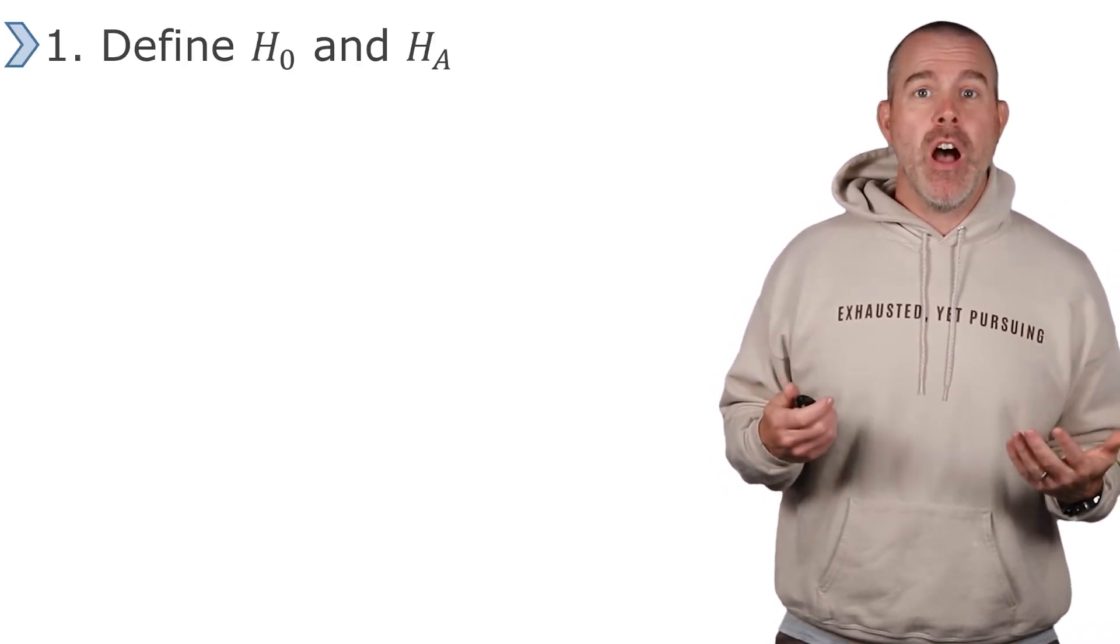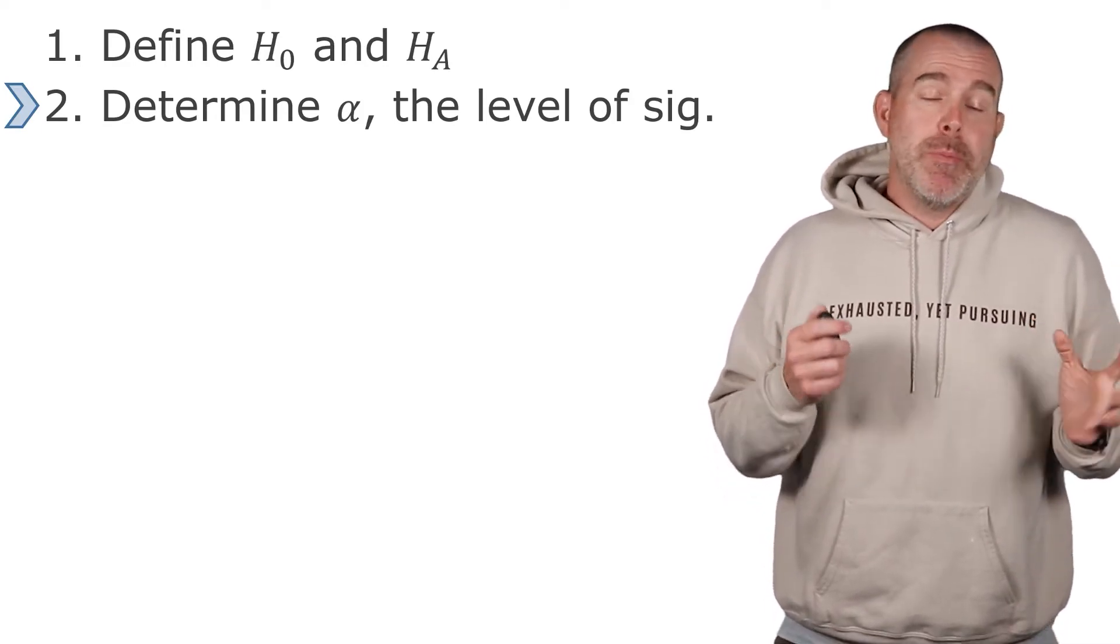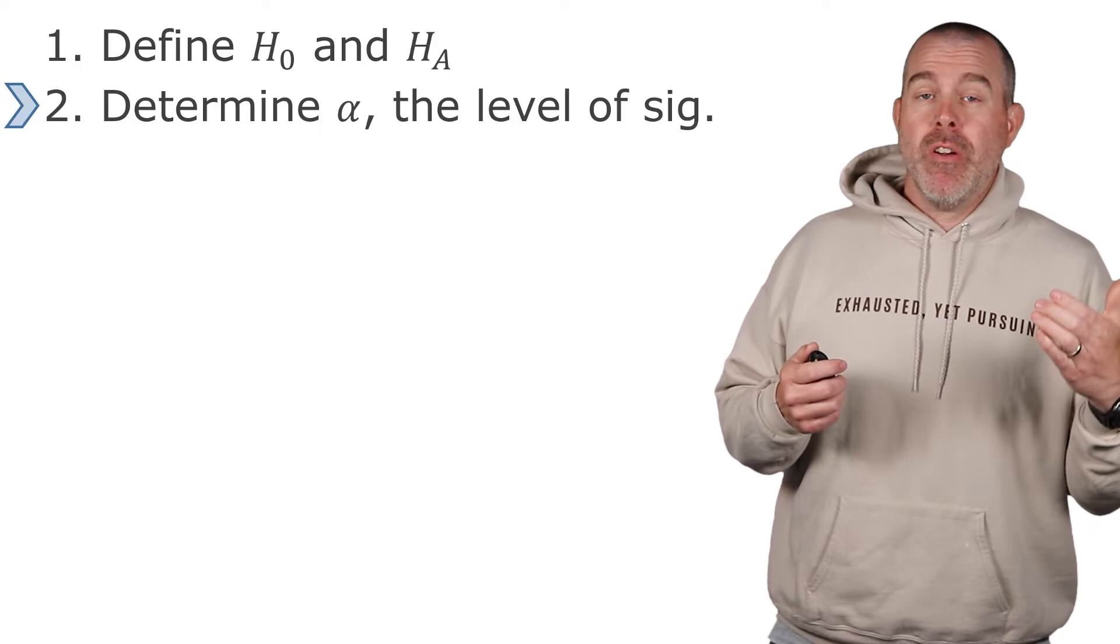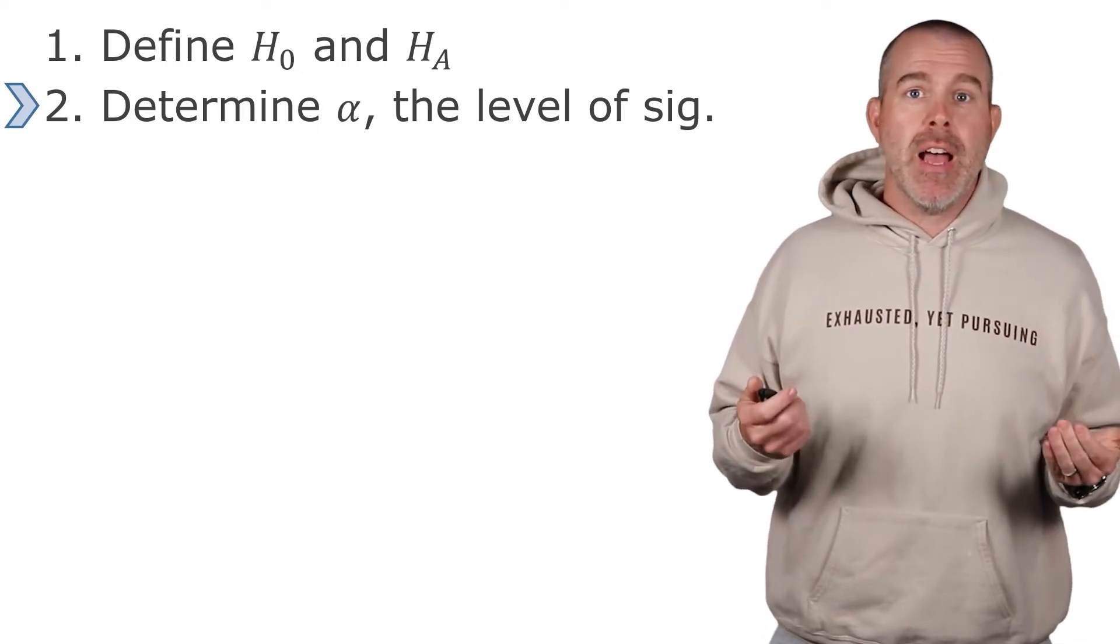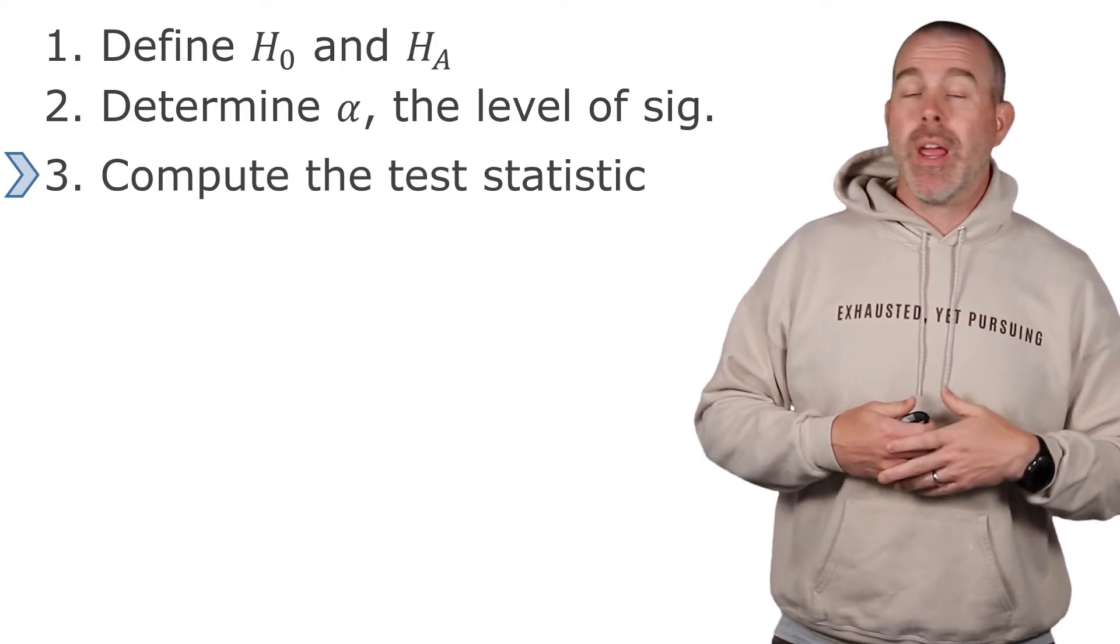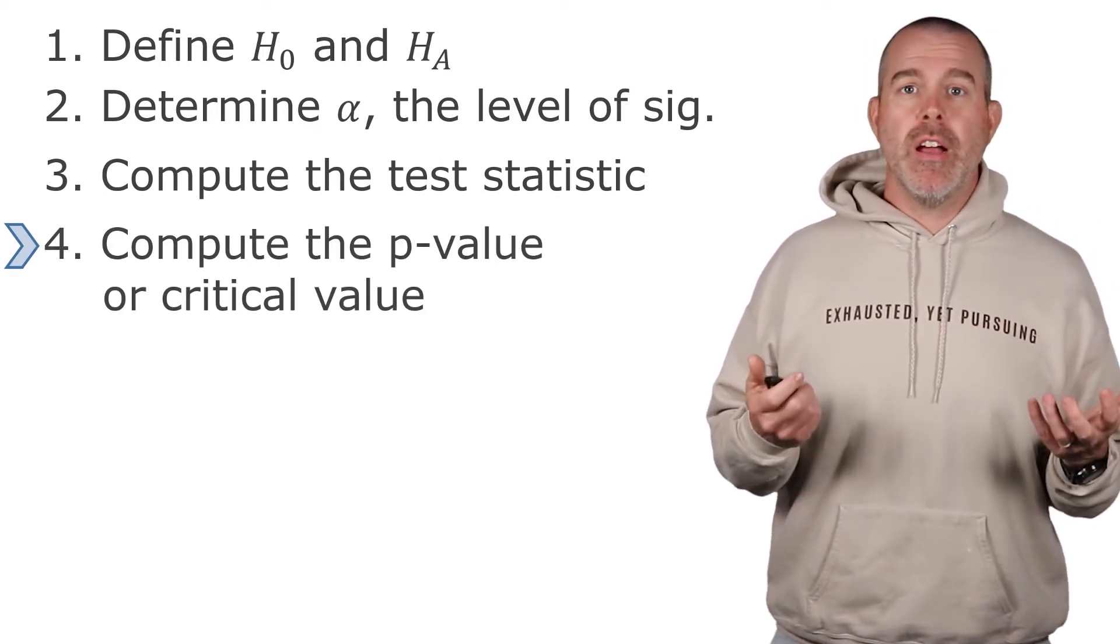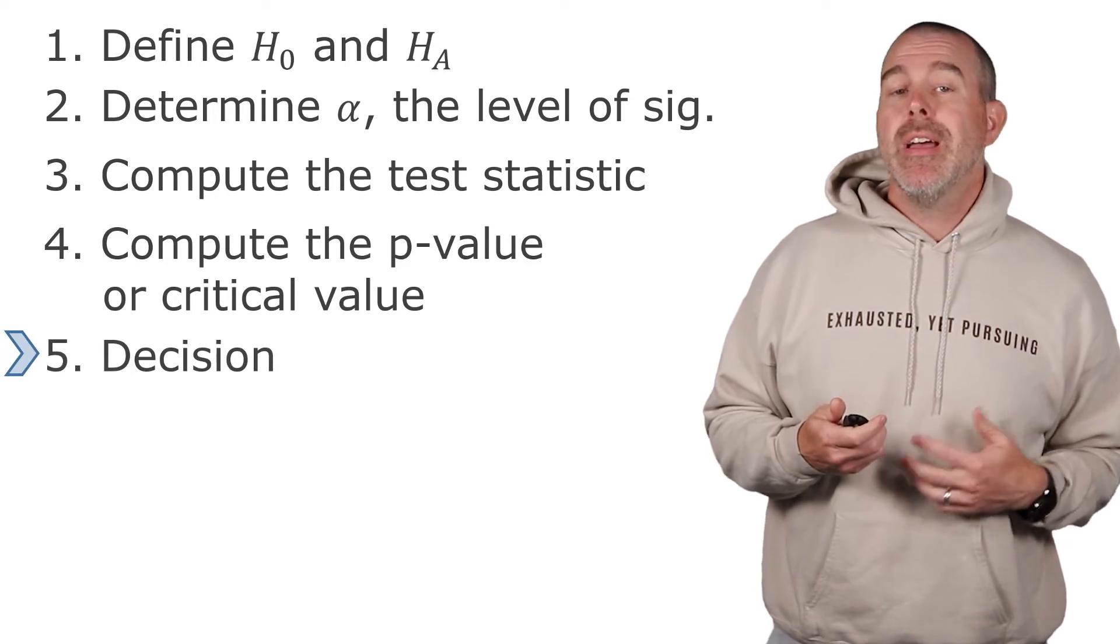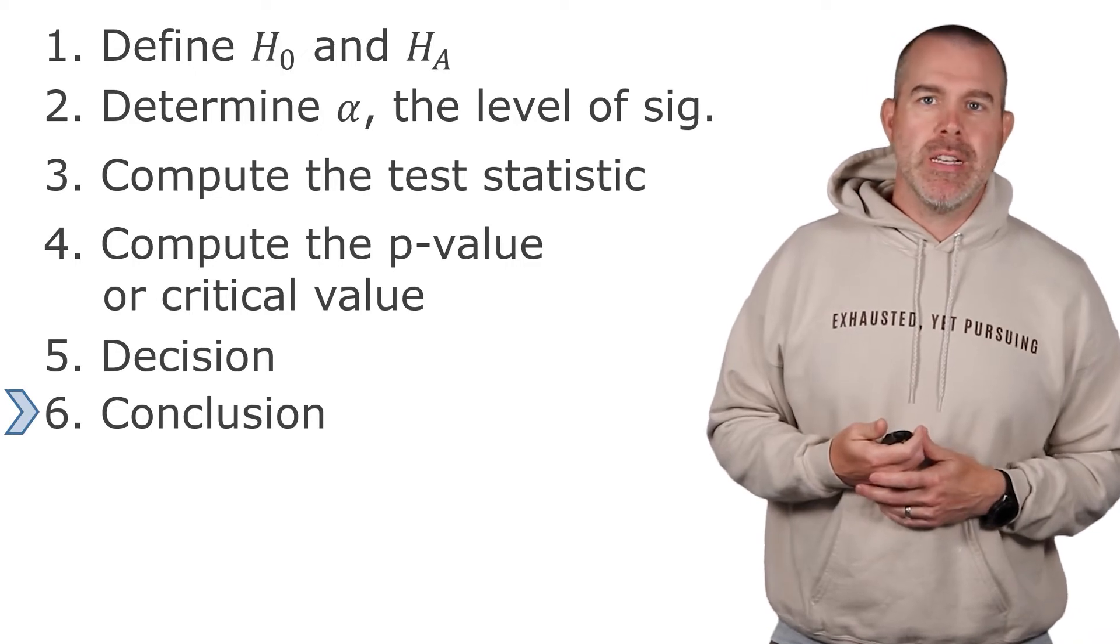First step, define your null and alternative hypothesis. Second step, choose your level of significance. When in doubt, you can choose 0.05, but depending on the consequences if you make a type one error - if that's a really bad mistake, maybe you're going to give someone a drug that has a chance of killing them - maybe you put 0.01 or 0.001 as your level of significance. It depends on the consequences of that type one error. Then you compute your test statistic. Then you compute the p-value or critical value depending on which method you are using. I like to use the p-value method, that's more common, but there are some dangers with it. Then you make your decision - do you reject or not reject the null hypothesis - and then you summarize it with a nice sentence with a conclusion.